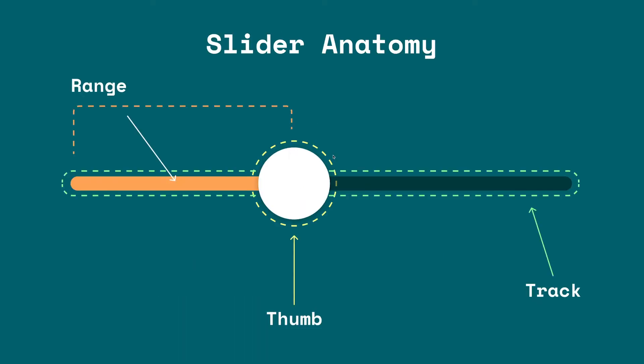Before we talk about the slider, it's always a good idea to understand the different parts of a slider component to help with terminology. The first part is the slider track, which represents the full range of the value from its min to its max value. The thumb represents the current value of the slider and serves as the control to scrub or change the value. The range is a visual indicator that shows what the value is at any point in time relative to the maximum value.